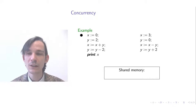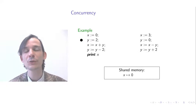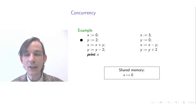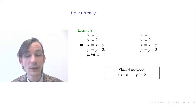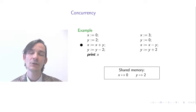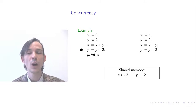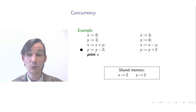Here's the control point for the process on the left. It's about to execute x = 0, and after executing it, it modifies shared memory so x is assigned value zero. Next the process on the left executes y = 2, which again modifies shared memory — now we have x = 0 and y = 2. Then we execute x = x + y, reading x and y (which are 0 and 2), so x becomes 2. Then we subtract 2 from y.